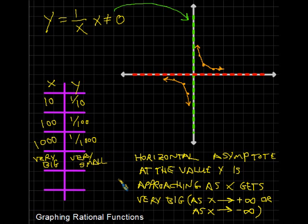Now, with regard to the horizontal asymptote, you will find that at the value of y, oh, I'm sorry. At the value y is approaching as x gets very big. In other words, we've seen this before with end behavior. As x goes to infinity, positive infinity, or as x goes to negative infinity, whatever value y is approaching,